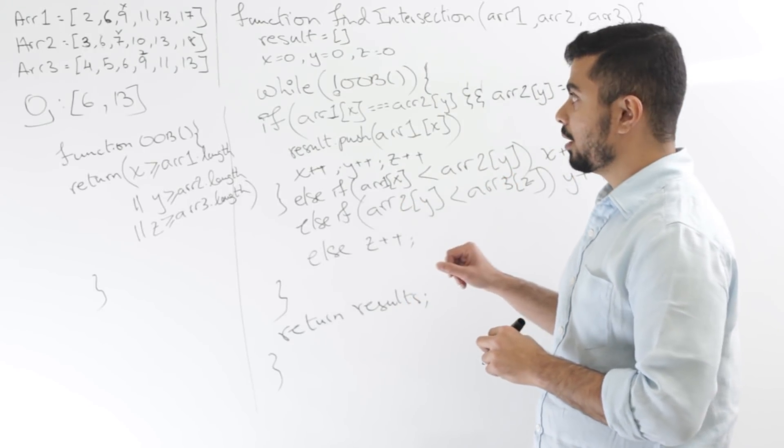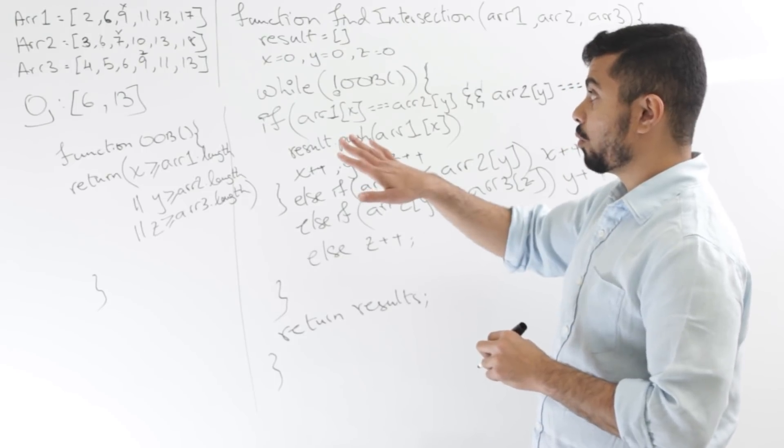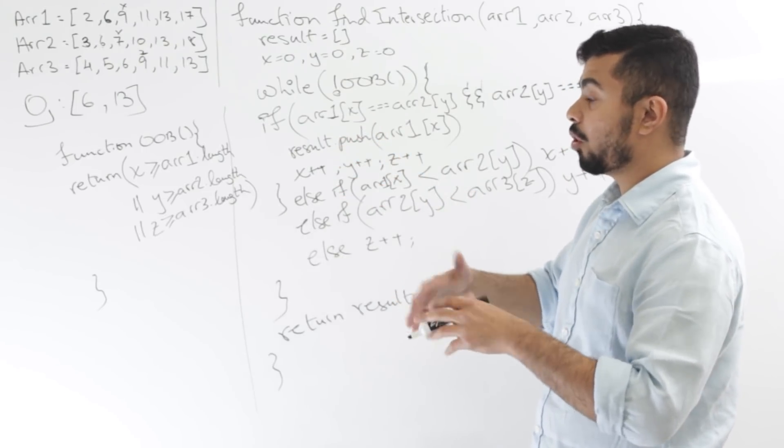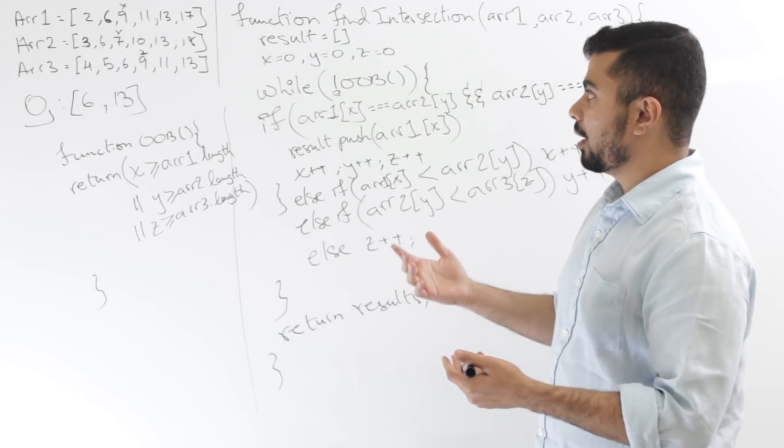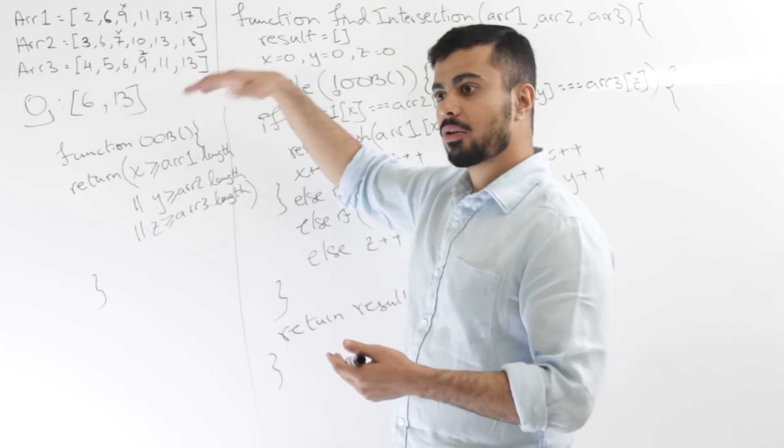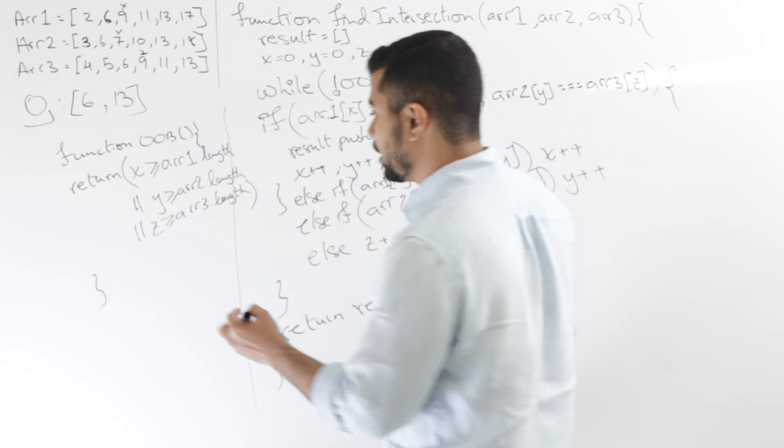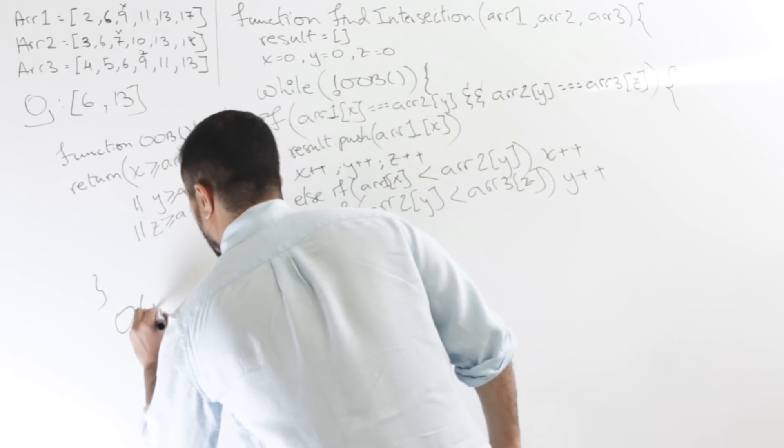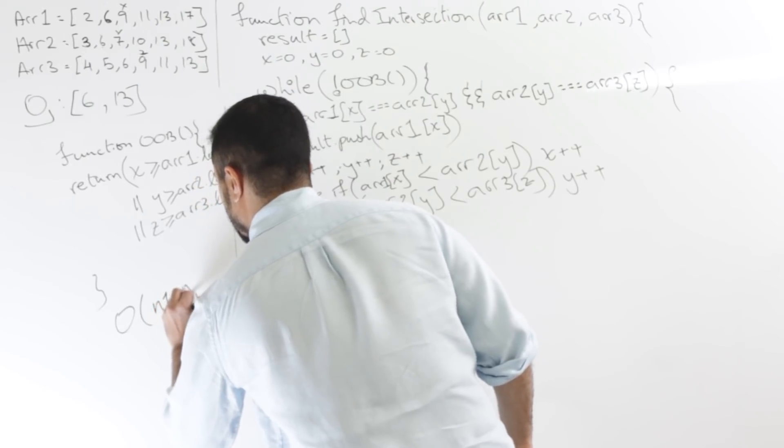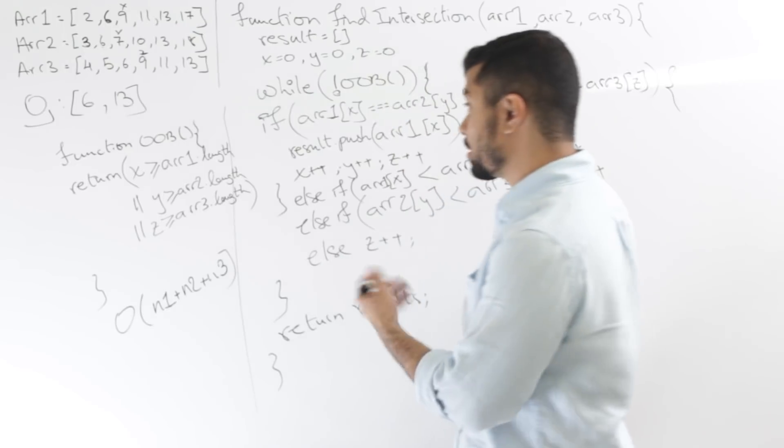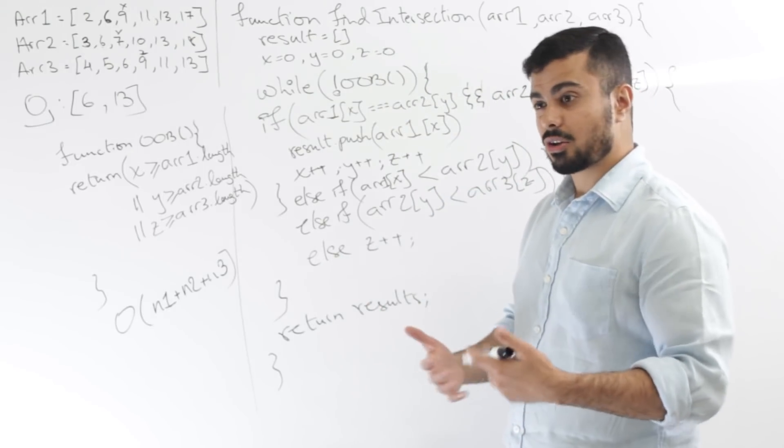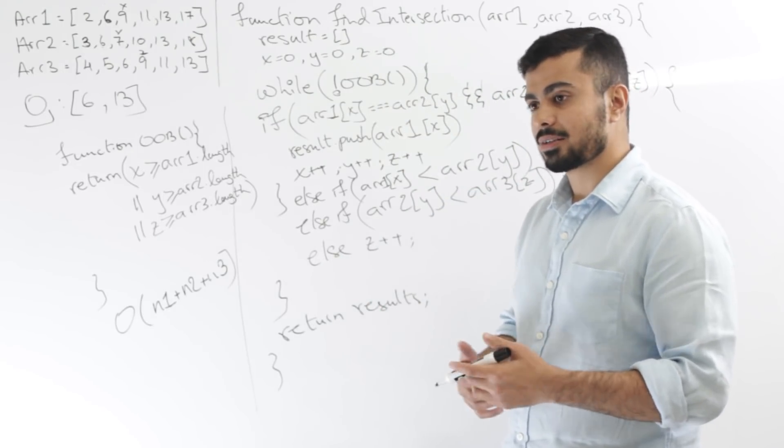The time complexities of this would be, in the worst case scenario, we're looping through all of the elements of all of the three arrays. So if, let's say, the length of array 1 is n1, array 2 is n2, and n3, then it would be O(n1 + n2 + n3). And the space complexity, we're not really using any auxiliary space, so that would be constant.